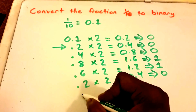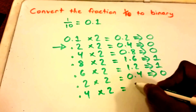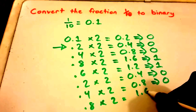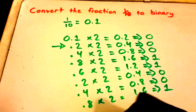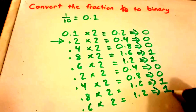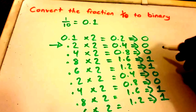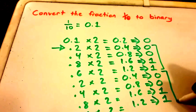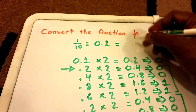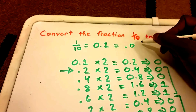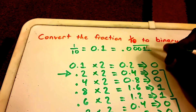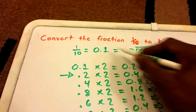Let's do some more checking. We take 0.4, multiply it by 2, and get 0.8 — record 0. Then 0.8 × 2 = 1.6 — record 1. Then 0.6 × 2 = 1.2 — record 1. You can see the pattern repeats itself. This means 0.1 in decimal is equal to 0.000011 repeating in binary — the line on top means those digits keep repeating.